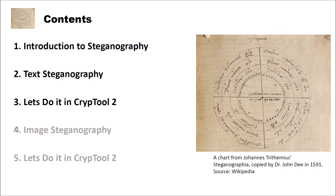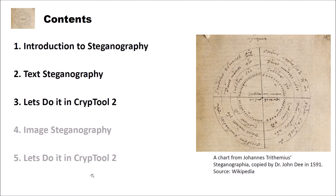As you see here, part 4 and 5 are written in grey color. This means that we will have a look at image Steganography in the next video, and we will also see how to do this in CrypTool 2 in the next video.